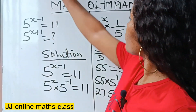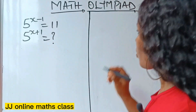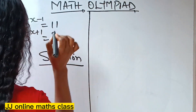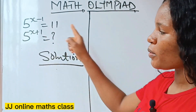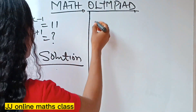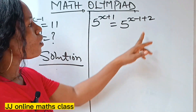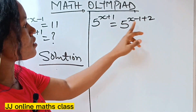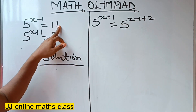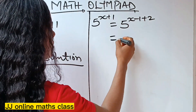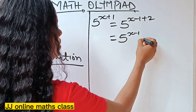Let's dive into the second solution — a very short one. We are asked to find 5 to the power of x plus 1. We know that 5 to the power of x plus 1 is the same thing as 5 to the power of x minus 1 plus 2, because negative 1 plus 2 is still plus 1. And we know that 5 to the power of x minus 1 equals 11. So we can rewrite this as 5 to the power of x minus 1 times 5 to the power of 2.